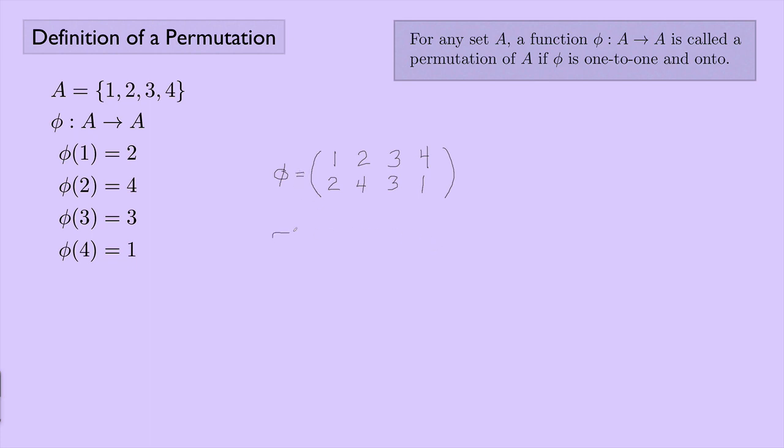Now I could write a completely different permutation. Maybe tau could be... Again, I'll have the brackets here. I'll have 1, 2, 3, and 4. And maybe 1 gets mapped to 3. Maybe 2 stays where it is. Maybe 3 goes to 1. And 4 stays where it is. So you can see how this works. This is much faster than having to actually write out what tau would do to every single number by writing tau of 1 equals 3, tau of 2 equals 2, and so on.